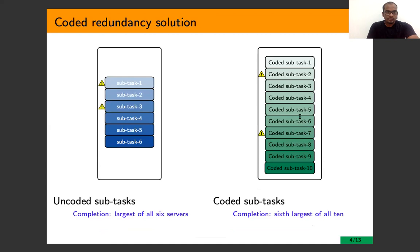In order to mitigate the effect of stragglers, one can introduce redundancy in computation. In the setup shown at the right, we consider MDS coded redundancy where sub-tasks are encoded to more number of coded sub-tasks and each server is working on unique coded sub-tasks. This implies that the coded sub-tasks completion at any six out of these ten distinct servers results in the completion of the original job. As soon as any six of the sub-tasks are completed, the remaining servers are killed.